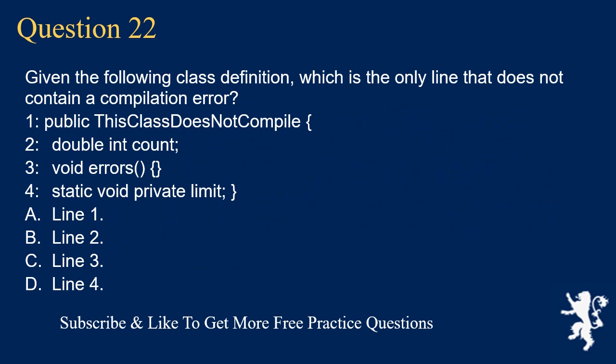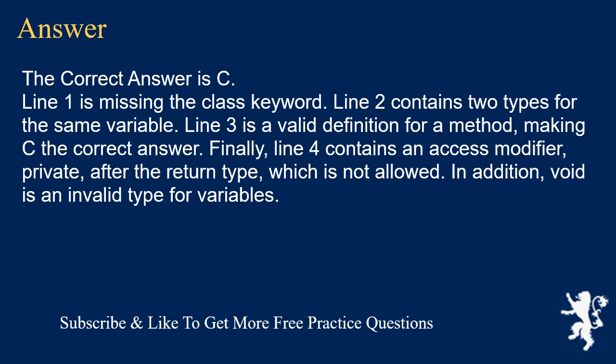Question 22: Given the following class definition, which is the only line that does not contain a compilation error? Line 1: public this class does not compile, line 2: double int count, line 3: void errors(), line 4: static void private limit(). Options: A) line 1, B) line 2, C) line 3, D) line 4. The correct answer is C. Line 1 is missing the class keyword. Line 2 contains two types for the same variable. Line 3 is a valid method definition. Line 4 contains an access modifier after the return type, which is not allowed, and void is an invalid type for variables.